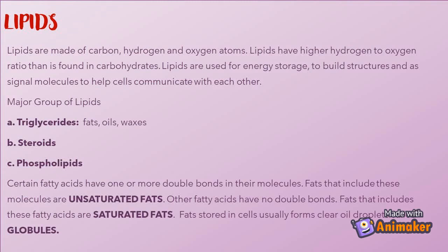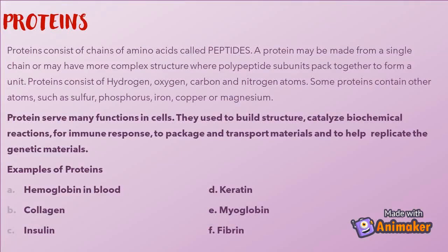The major groups of lipids include: triglycerides (fats, oils, waxes), steroids, and phospholipids. Certain fatty acids have one or more double bonds — fats that include these molecules are unsaturated fats. Other fatty acids have no double bonds — these are saturated fats. Fats stored in cells usually form clear oil droplets called globules.